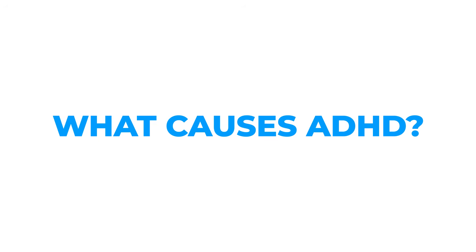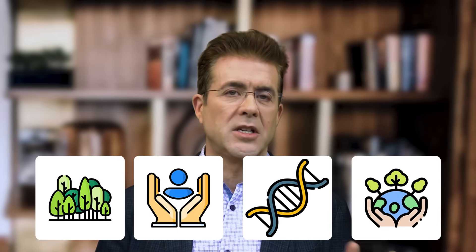What causes ADHD? Is it nature? Nurture? Genetics? Environment? What we know from research is that if a child has ADHD, there's a 50-50 chance that one of the parents has ADHD — so there's likely a good genetic component. We also know that if a sibling has ADHD, there's a much higher likelihood another sibling would have it. In fact, with identical twins, the concordance rate of having ADHD is exponentially higher.